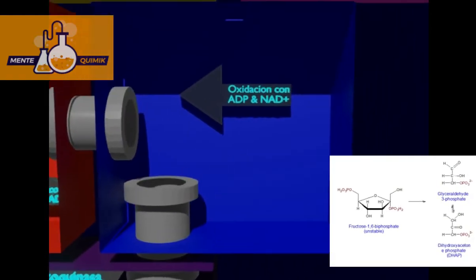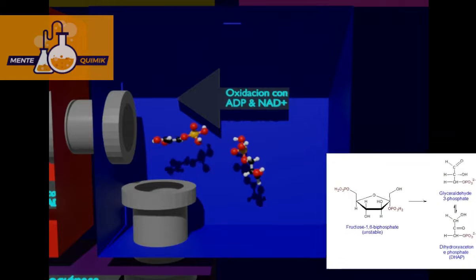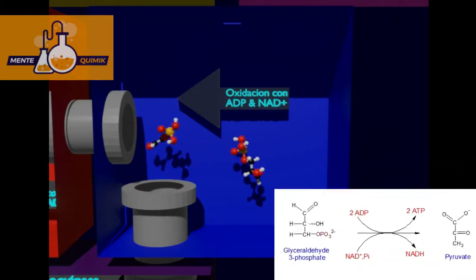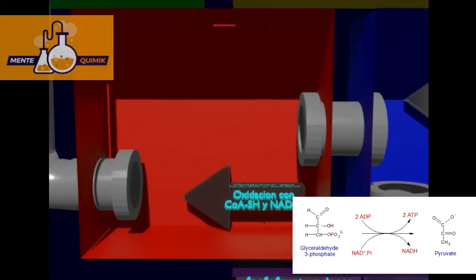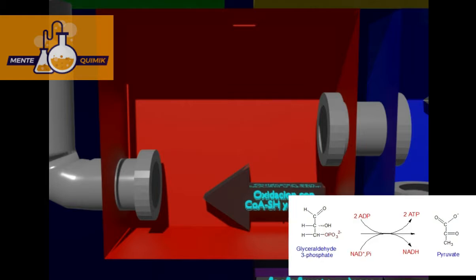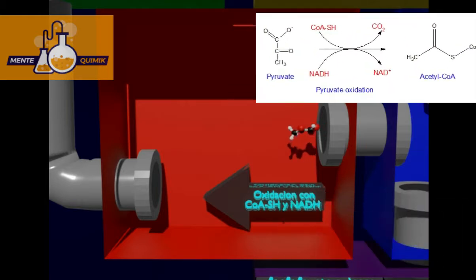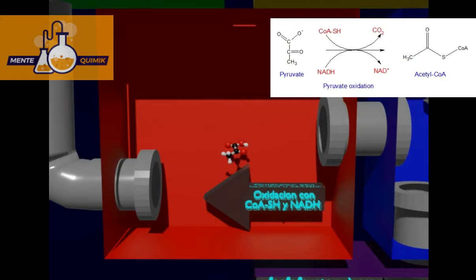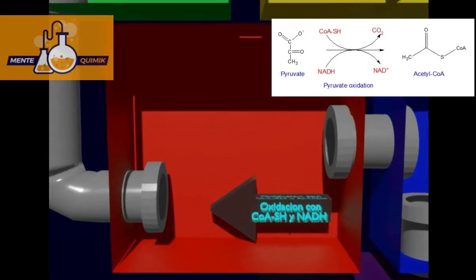These molecules, in the glyceraldehyde-3-phosphate form, are oxidized with ADP and NAD⁺ to synthesize pyruvate. Pyruvate is then oxidized with NAD⁺ and coenzyme A to form acetyl-CoA.